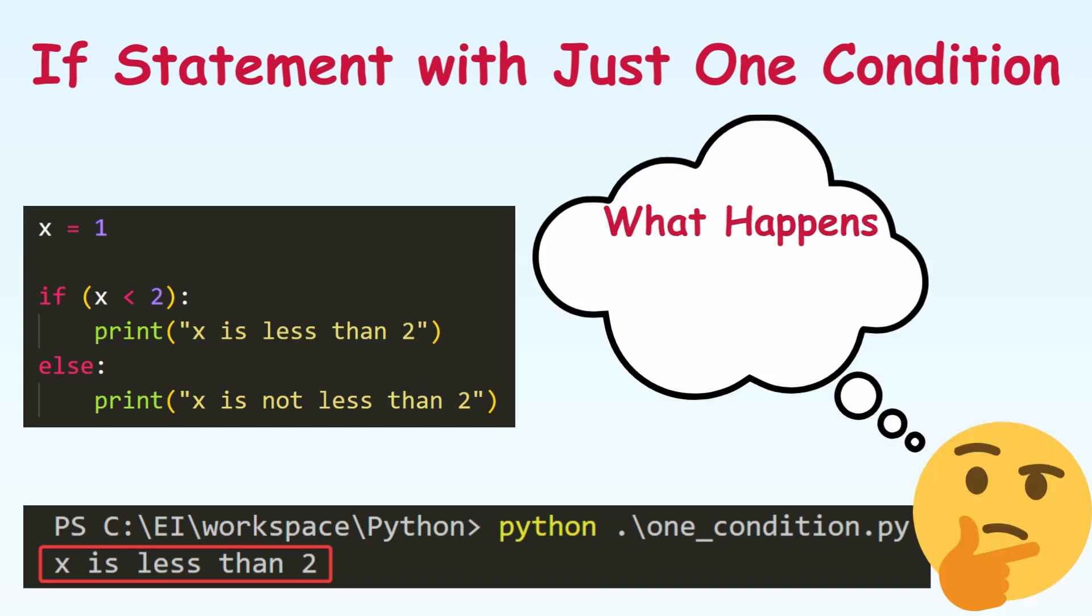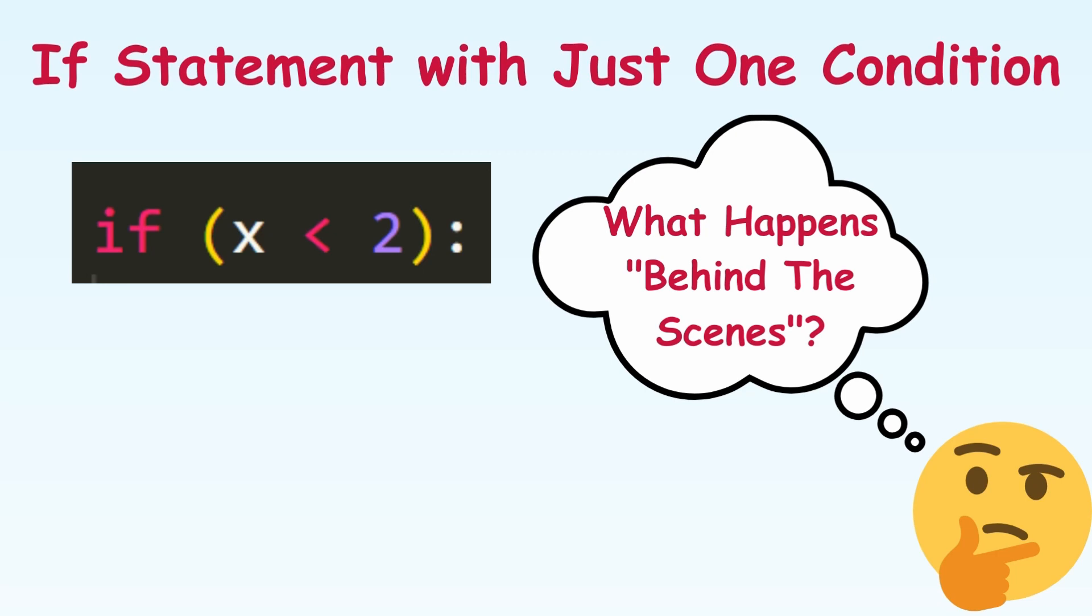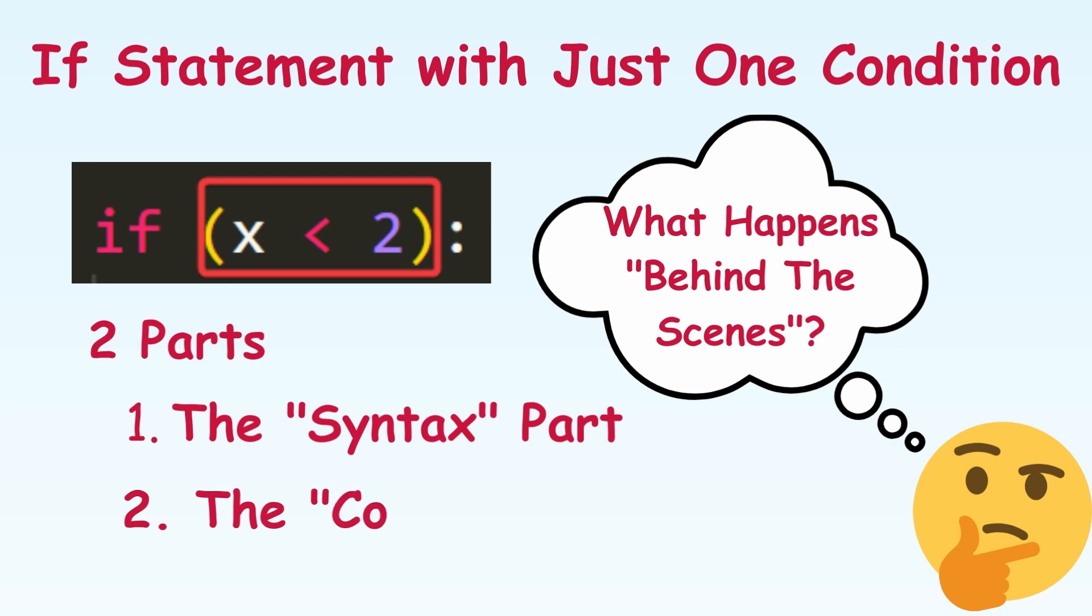Though it makes sense intuitively, let's try to understand what happens behind the scenes. Any if statement has two parts: the syntax part which consists of the if keyword and the colon at the end, and the condition which in this example is x less than 2.